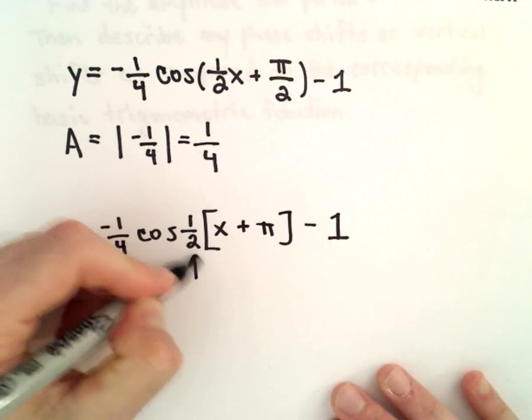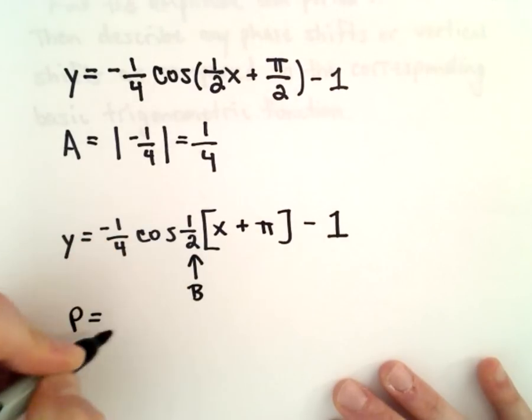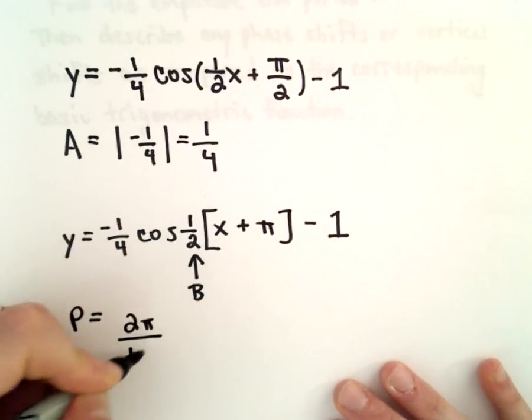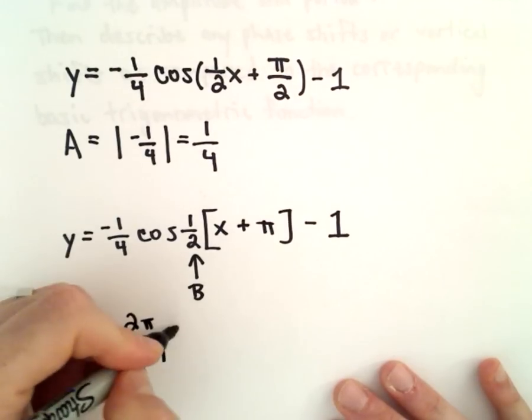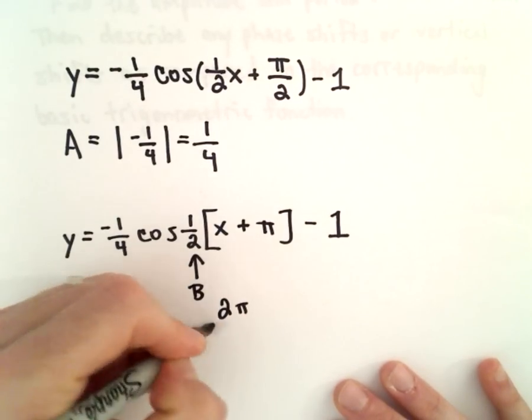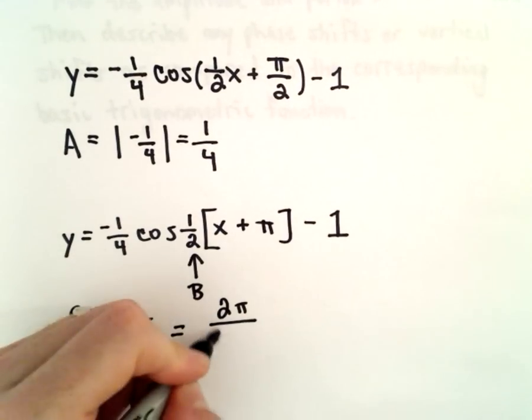This is going to be our b value when we do the period. So two pi divided by the absolute value of b. So in this case, we'll have two pi divided by the absolute value of one-half.